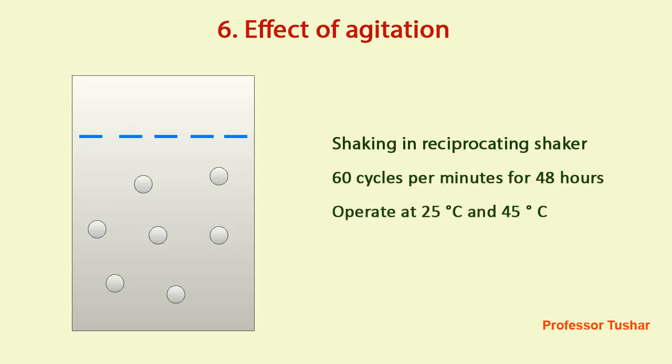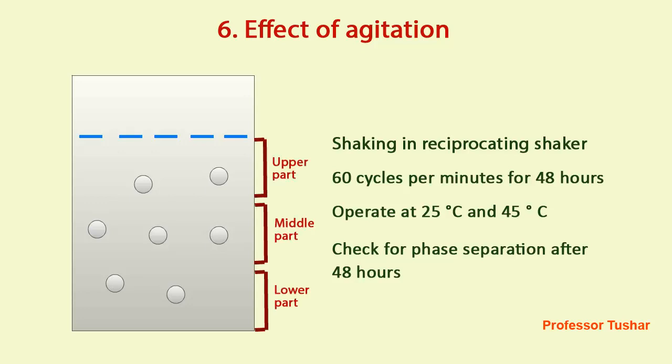Readings are taken for two temperatures that is 25 degrees celsius and 45 degrees celsius. After 48 hour process, check for the phase separation or coalescence in the emulsion. After the process, take sample from the upper part, middle part and lower part of the emulsion and analyze for the oil and water content in the sample.